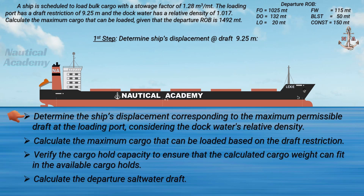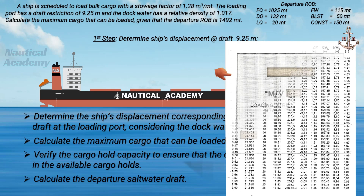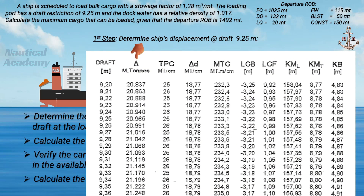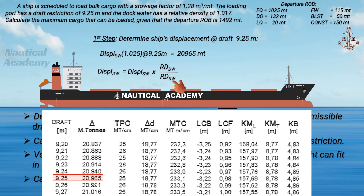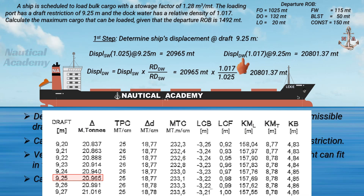Our main concern is the draft limit at the loading port. Let us first determine the ship's displacement at a draft of 9.25 meters using the ship's hydrostatic table, which can be found in the ship's stability manual. The ship's displacement at a draft of 9.25 meters is 20,965 metric tons. This hydrostatic table was developed when the ship was floating in saltwater with a relative density of 1.025. To determine the displacement in dock water, it is equal to displacement in saltwater times relative density in dock water, divided by relative density in saltwater. The ship's displacement when floating in dock water where the relative density is 1.017, at a draft of 9.25 meters, is 20,801.37 metric tons.